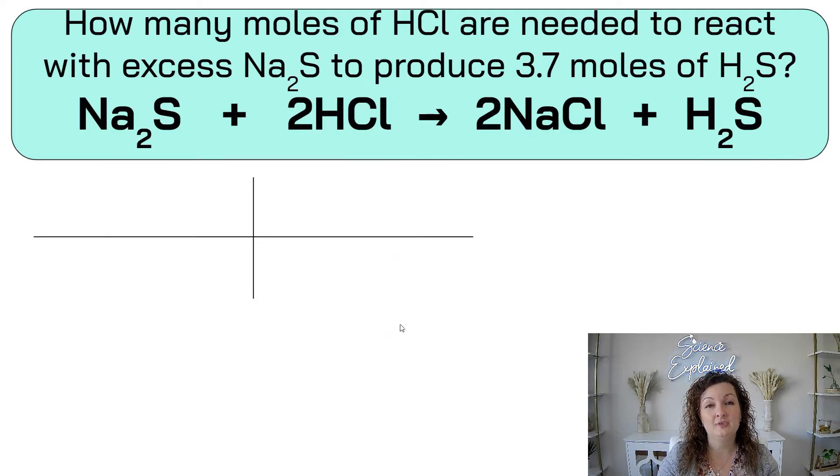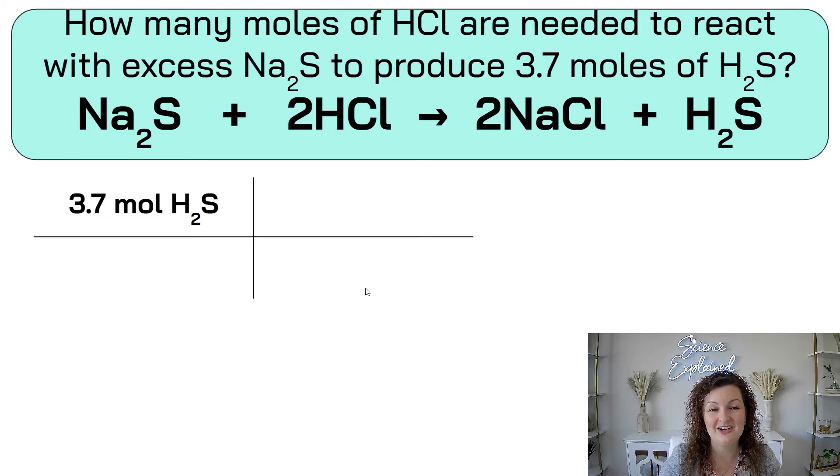Here it is all balanced for you. All you needed to do was add a 2 in front of the HCl and a 2 in front of the NaCl, and then you are balanced and good to go. So let's take a look at our bridge with our balanced chemical equation. You start with the 3.7 moles of H2S. Diagonal down is moles of H2S, and we need to look for that one. Here's H2S, and we have nothing in front, which means it's a 1, right? It's an understood 1.